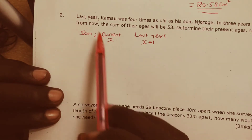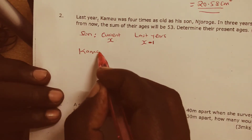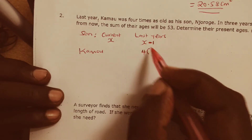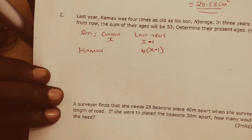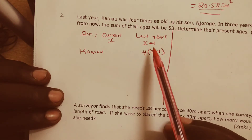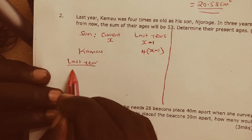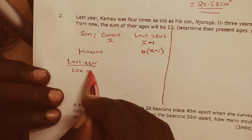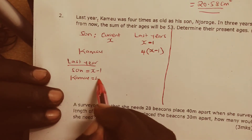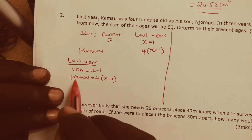Then from there, we are told last year Kamau was four times as old as the son, who was X minus 1. Now we have gotten last year's age of the son. So last year the son is X minus 1. Then the father, who is Kamau, was four times as old as the son, which is 4 times (X minus 1).